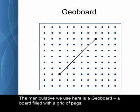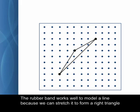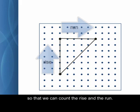The manipulative we use here is a geoboard, a board filled with a grid of pegs, and we use rubber bands to model lines. The rubber band works well to model a line because we can stretch it to form a right triangle, so we can count the rise and the run.